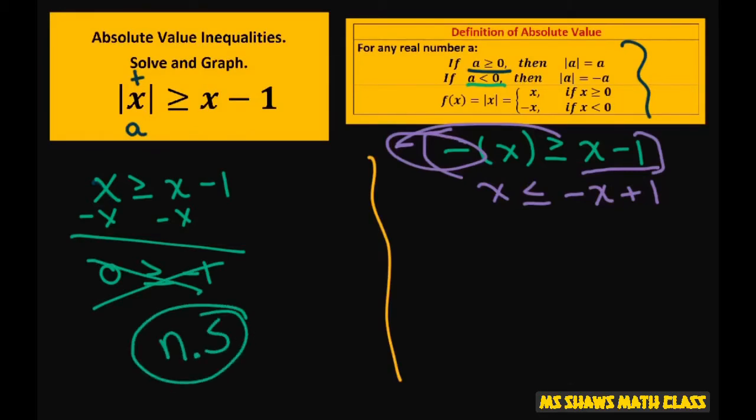And for this one, we're going to add x to both sides. So you get 2x is less than or equal to 1. Divide both sides by 2 and you get x is less than or equal to 1 half.